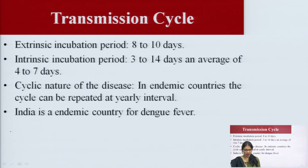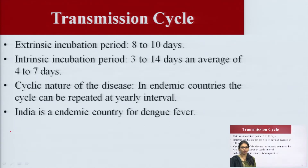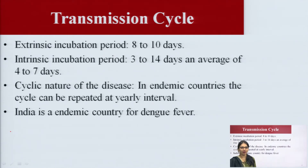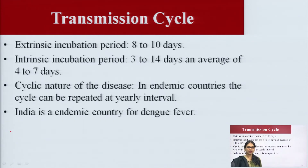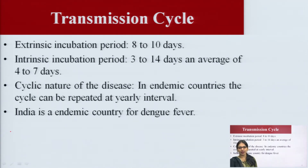Regarding the transmission cycle: the extrinsic incubation period is 8 to 10 days, and the intrinsic incubation period is 3 to 14 days, with an average of 4 to 7 days. In endemic countries, the cycle can repeat at yearly intervals. India is an endemic country for Dengue fever.